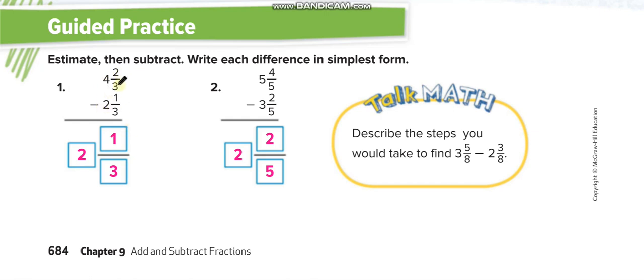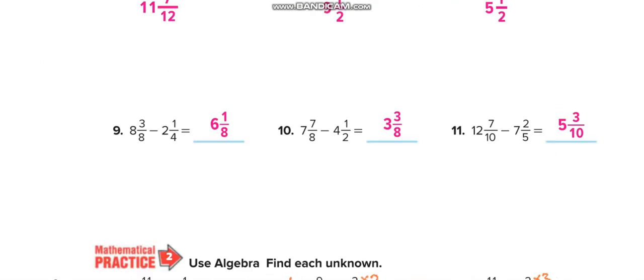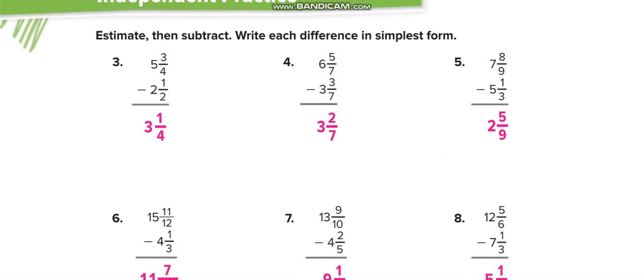This one: the denominators are already same. 4 minus 2 is 2, 2 minus 1 is 1/3. 5 minus 3 is 2, 4 minus 2 is 2/5. This one: 3 minus 2 is 1, and 5 minus 3 is 2/8, then you simplify - divide by 2 up and 2 down, so it will be 1/4. Similarly, you will solve all these questions in independent practice for yourself and then match your answers through this video.